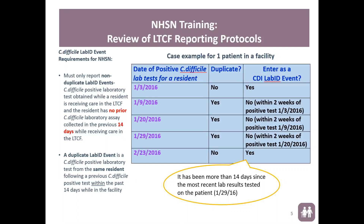The next one is 1-29. That is within two weeks from the 1-20 test. Even though it came back positive, that's still a duplicate, so it's not reported. The last one is 2-23. It's been more than 14 days from the 1-29 test, so it is not considered a duplicate and can be reported into NHSN.